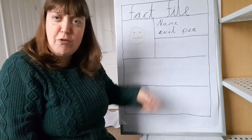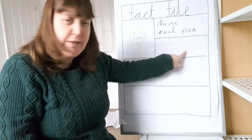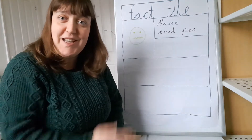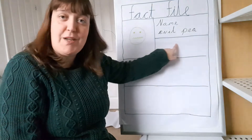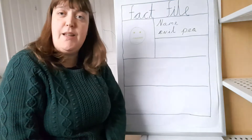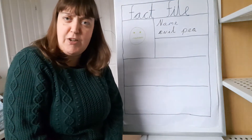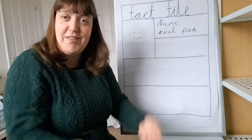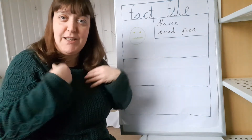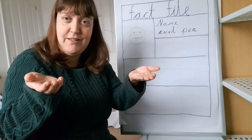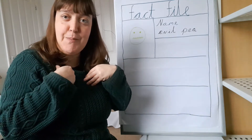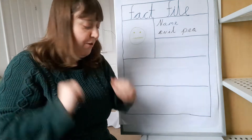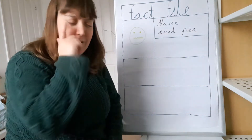From your story map, do you remember what goes in this box? That's right, his appearance. So we put his appearance in here. Now what is his appearance? What does he look like? What color is he? That's right, the evil P is green! The evil P is green! Brilliant. Let's try and write 'green.' What sound do I need?